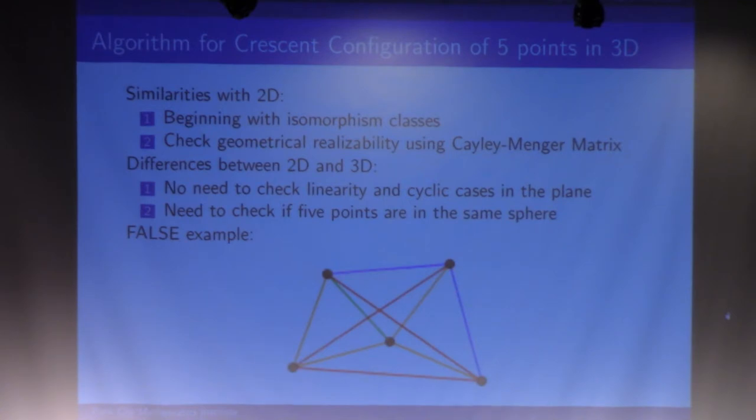Both approaches begin with finding all the isomorphism classes. As Malachi just talked about, we have many cases to discuss by hand, but by reducing them to isomorphism classes, we have a reasonably smaller number to go through one by one. The second similarity is that we also check geometric realizability using the Cayley-Menger matrix. This was used in the paper written by Paulson's students, and we expand it to 3D.